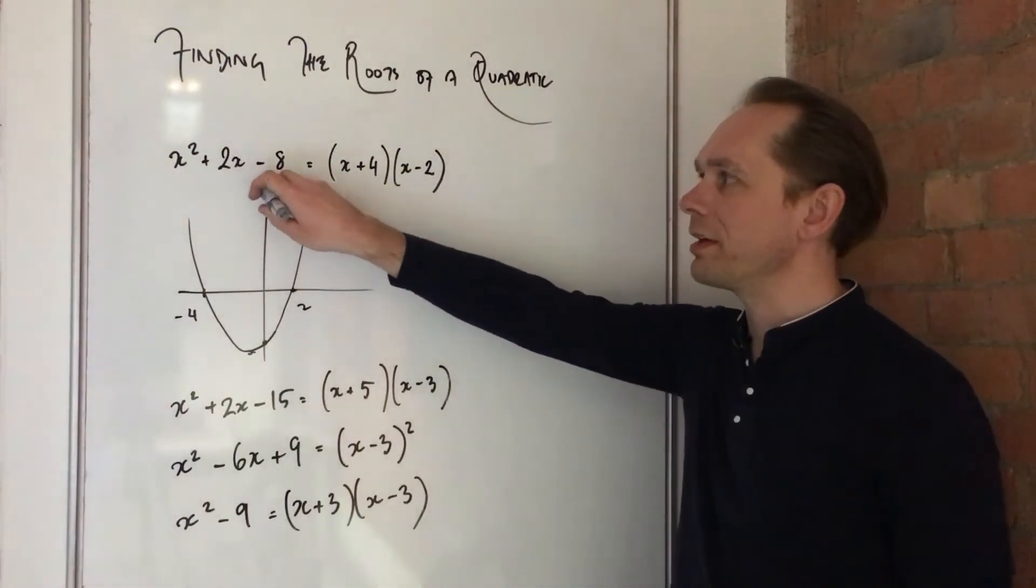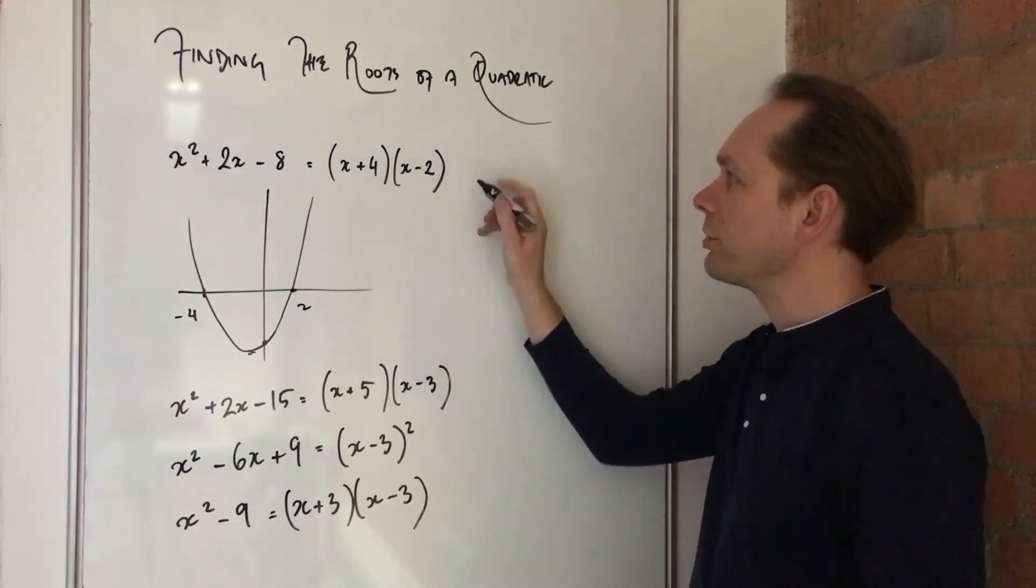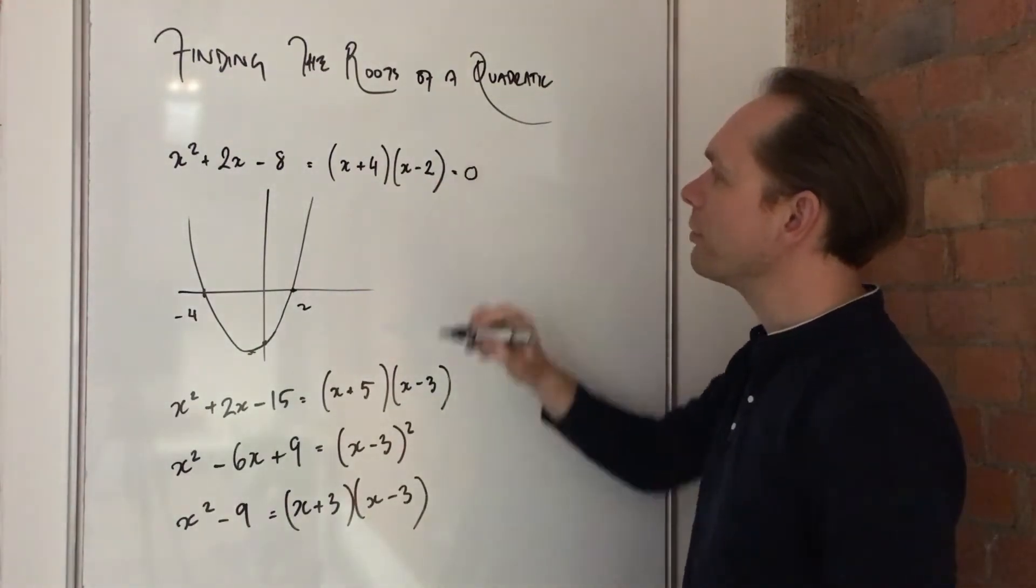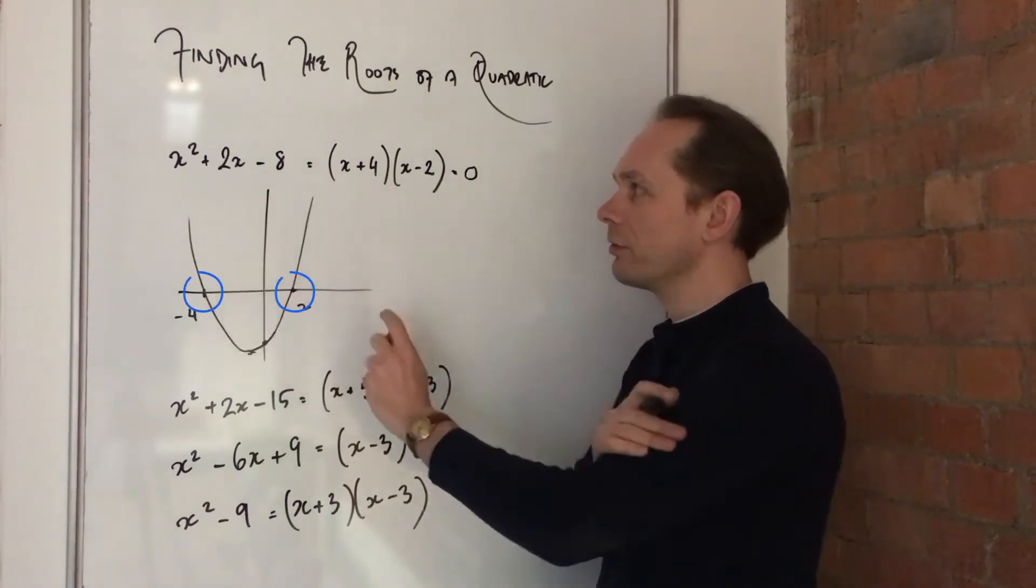So you say, here's our quadratic x squared plus 2x minus 8. If we can factorise it, x plus 4, x minus 2, and make it equal to zero, then the solution of this is the answer to the roots.